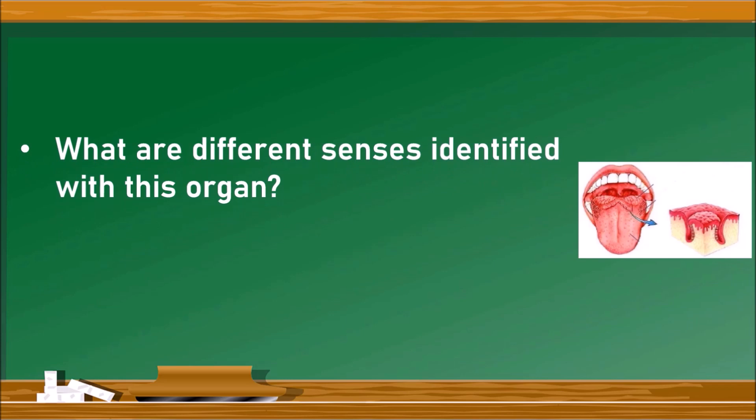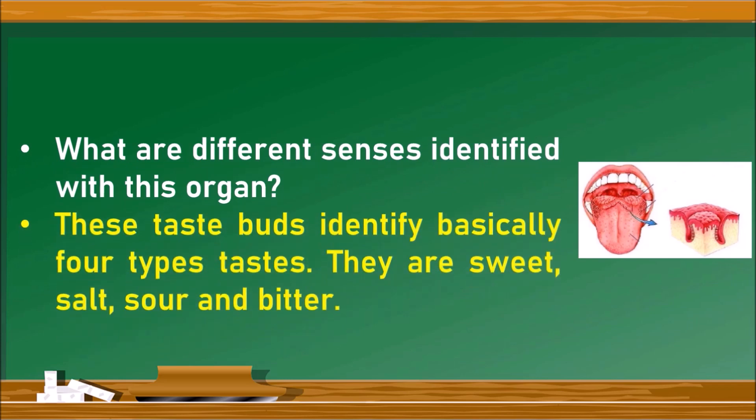What are the different senses identified with these organs? These taste buds identify basically four types of taste such as sweet, salt, sour, and bitter.